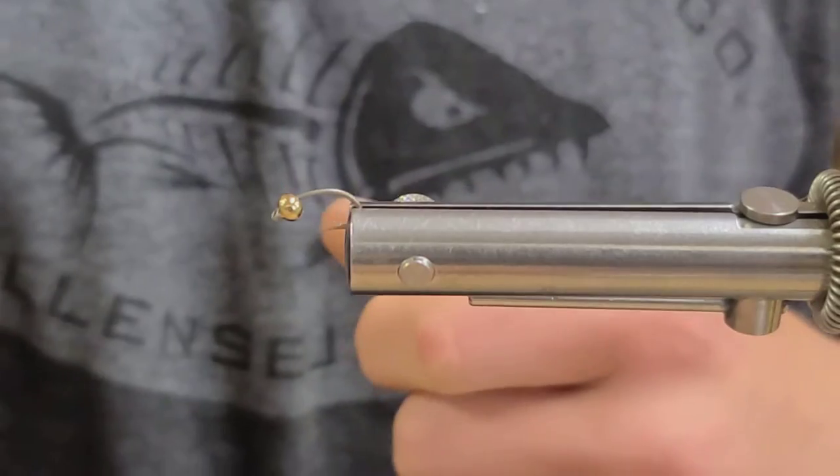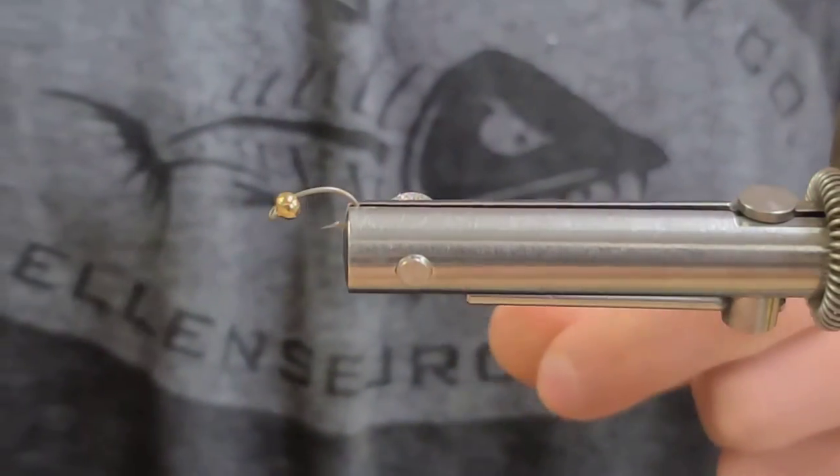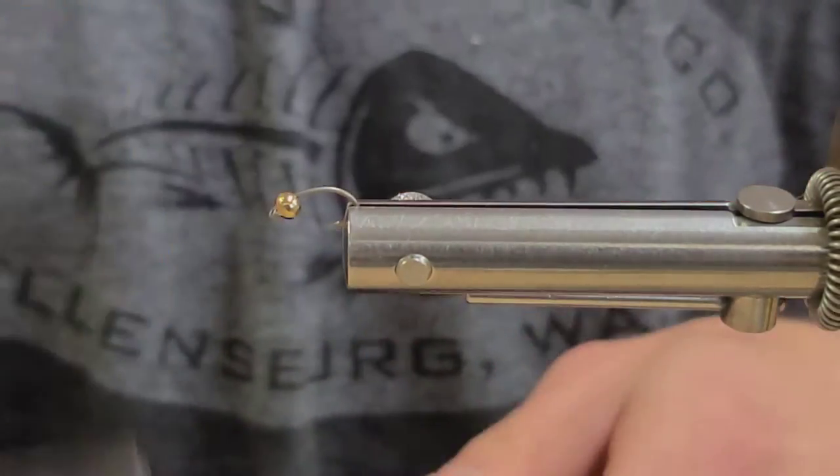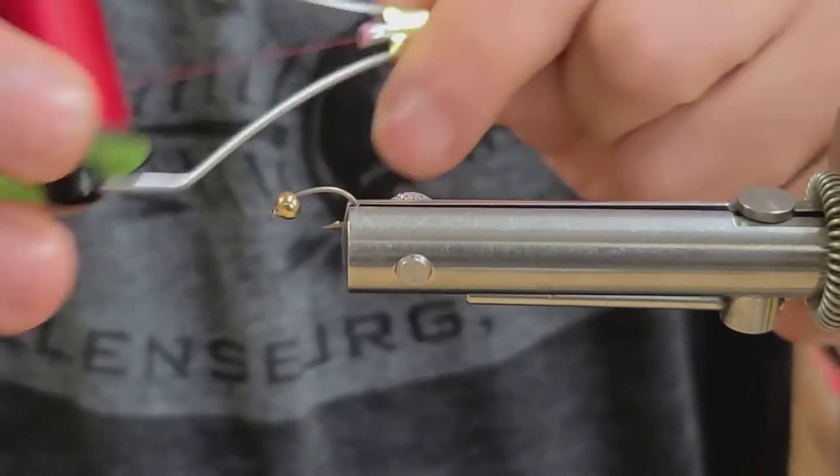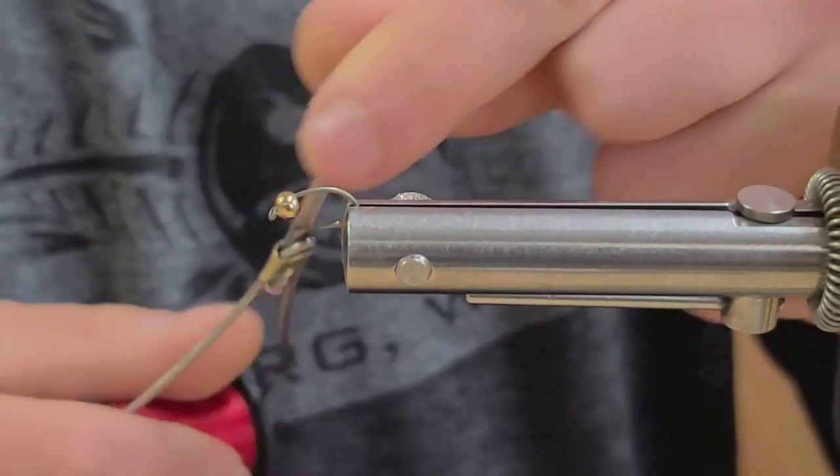To start off I'm using a size 12 scud hook and 1/8th brass bead. And the thread I'm using is an 8-aught unithread in red.